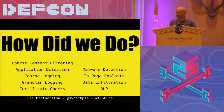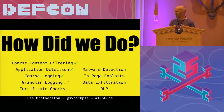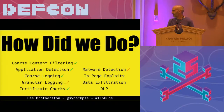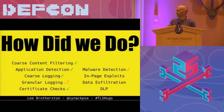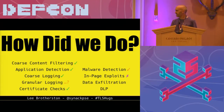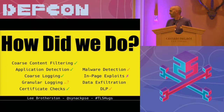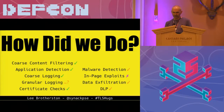So how did we do? Coarse content filtering — fine. Application detection — got it. Coarse logging — got it. Granular logging — not really. Certificate checks — did it. Malware detection — sort of: we didn't do it in the AV sense, but you can have TLS signatures on malware so you can pick up a certain amount. In-page exploits — totally didn't do that, but I said I was only doing 90%. DLP — half did. We don't detect documents going out, but we can detect things like Google Drive and Dropbox that may hint at data exfiltration.